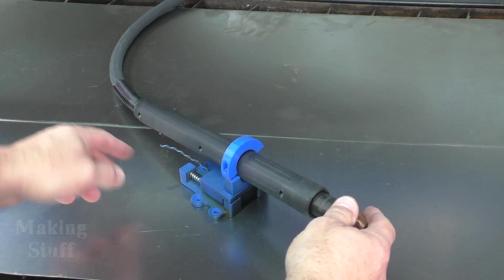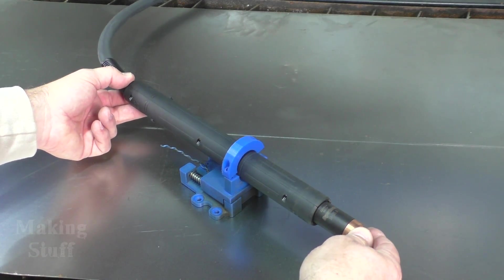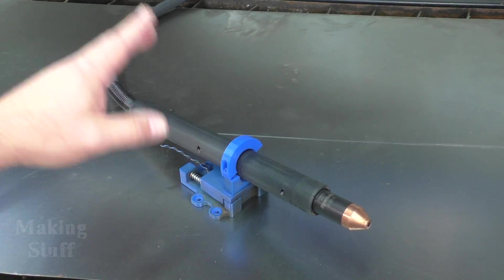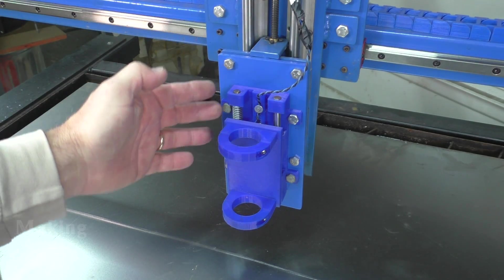The problem I had was that when I printed the larger ring and put it on here, this torch is so long that it wanted to flex back and forth like this. So I could not use this floating Z axis and I had to come up with my own new version of the floating Z axis.